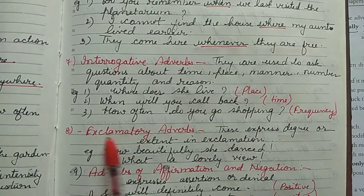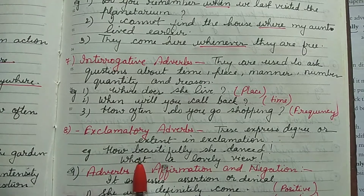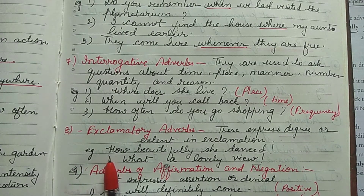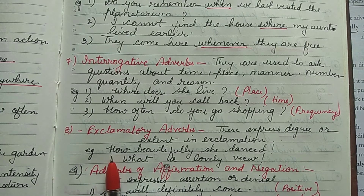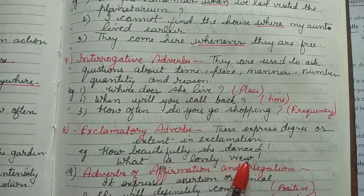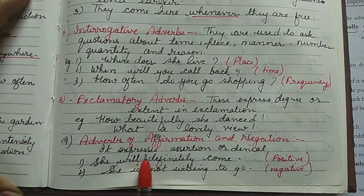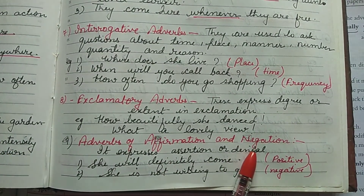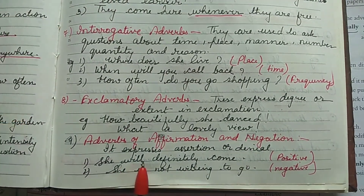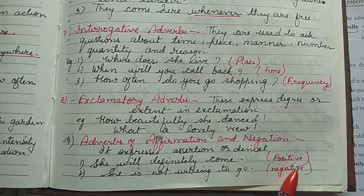Coming to exclamatory adverbs, these express the degree or extent in exclamation form. Examples: 'How beautiful she danced!' 'What a lovely view!' These are exclamatory adverbs. Then adverb of affirmation or negation can be expressed in positive or negative form. Examples: 'She will definitely come' — positive. 'She is not willing to go' — negative.